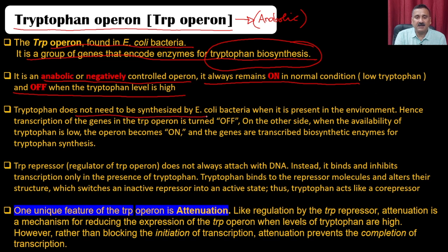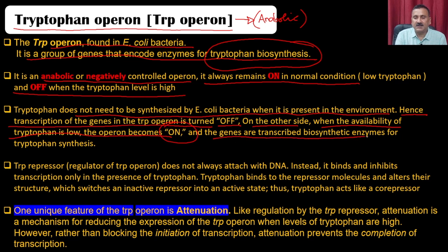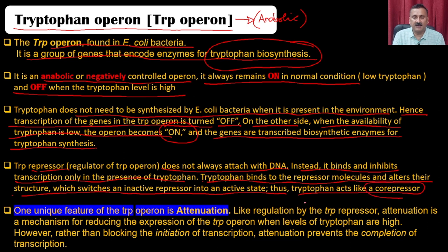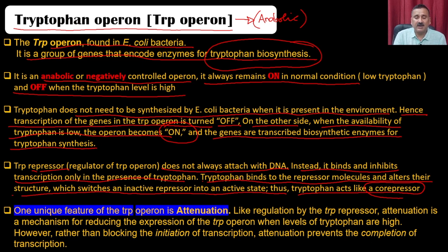Tryptophan does not need to be synthesized by E. coli when it is present in the environment. Hence, the transcription of genes in the tryptophan operon is turned off. When tryptophan availability is low, the operon turns on and genes are transcribed for tryptophan synthesis enzymes. Tryptophan binds to the repressor and alters its structure, switching an inactive repressor into an active state — thus tryptophan acts as a corepressor, enhancing the repression activity and converting the inactive repressor into an active repressor.